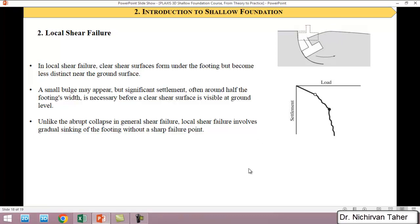Also, unlike the abrupt collapse in general shear failure, local shear failure involves gradual sinking of the footing without a sharp, distinct failure point. As we can see in here, the settlement gradually increases and load as well, and we cannot see the exact point when the failure happens or when the load starts to decrease.